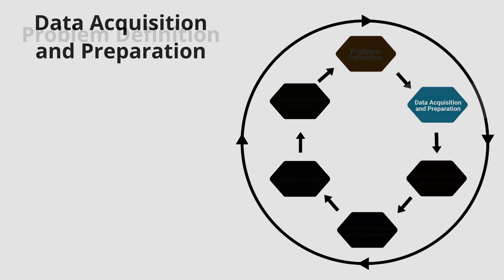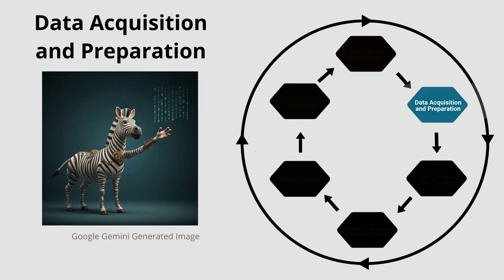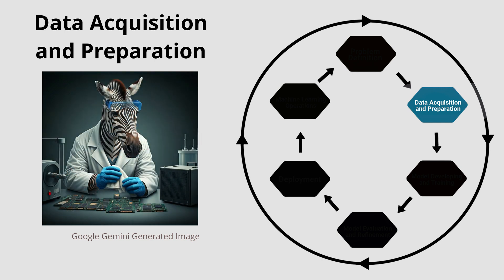The second phase is data acquisition and preparation. Machine learning algorithms need data to learn, so you need to gather relevant data and prepare it for use. This phase may involve cleaning the data, dealing with missing values, or transforming the data into a format suitable for modeling. This phase is often the most time-consuming phase of the life cycle.